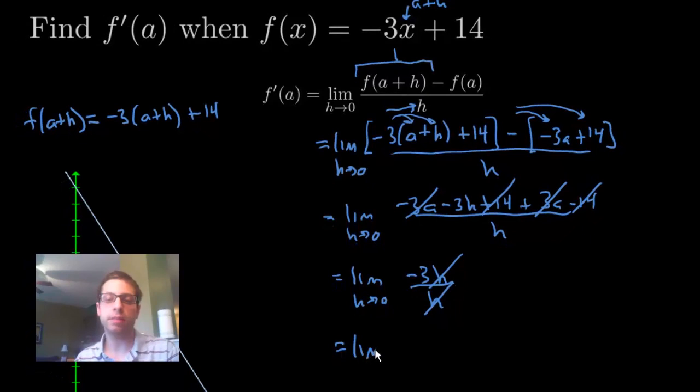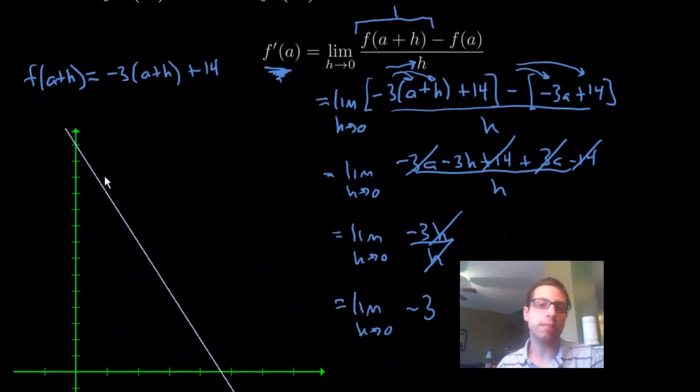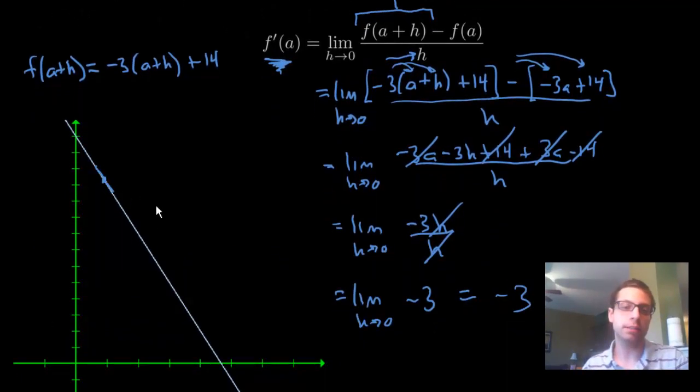Now, what's left is the limit of -3, which is exactly what we got in the last example. And the limit of a constant, again, is that constant. So, f'(a) is -3, which again matches because the slope at any point on this graph for any a, right, if that was a, this could be a, doesn't matter. The slope will always be -3.